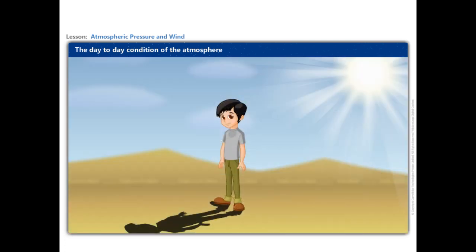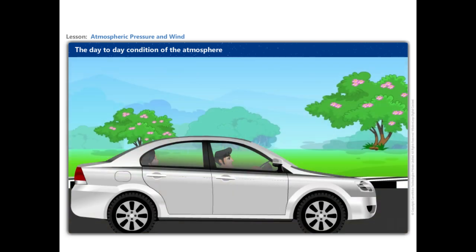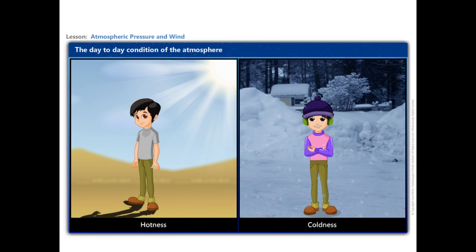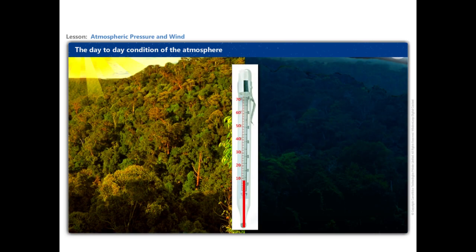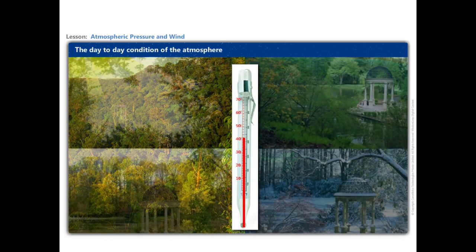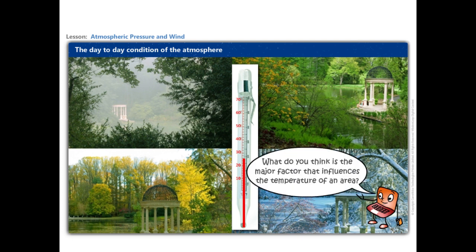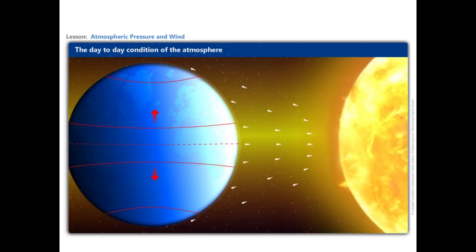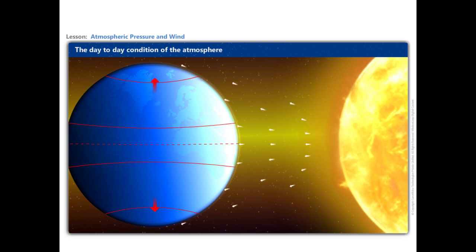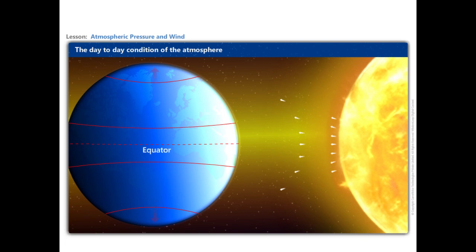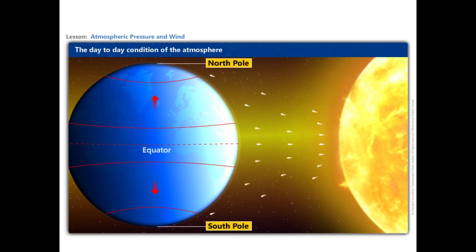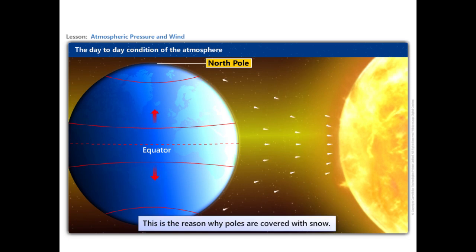A hot or humid weather may make one irritable. On the other hand, a pleasant, breezy weather may make one cheerful and even plan for an outing. The degree of hotness and coldness of air is known as temperature. The temperature of the atmosphere changes not only between day and night, but also from season to season. An important factor that influences the distribution of temperature is incoming solar energy intercepted by the Earth, known as insolation. The amount of insolation decreases from the equator towards the poles, and thus the temperature decreases in the same manner — this is the reason why poles are covered with snow.